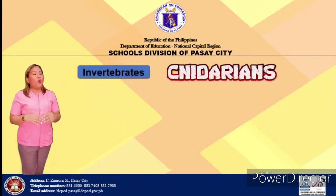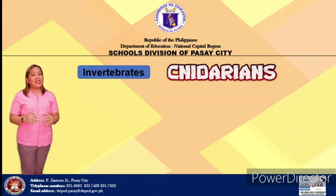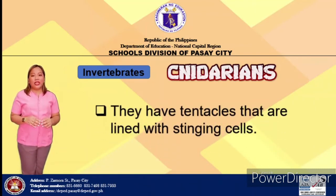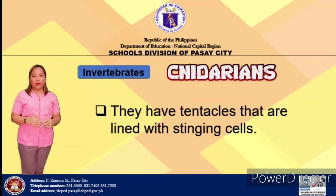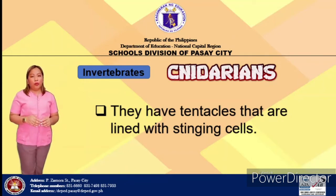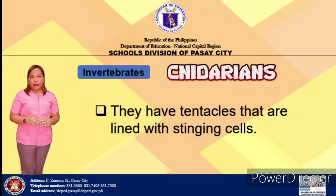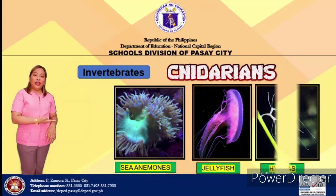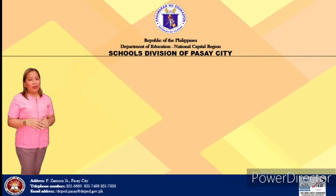How about cnidarians? What are their characteristics? Cnidarians are invertebrates that exhibit radial symmetry, meaning they have tentacles that are lined with stinging cells. Their stinging cells help them defend themselves and catch food. Animals in this group look like plants because they are attached to the ocean floor. There are about 10,000 kinds of these marine animals. They are mostly found in the ocean and freshwater. Examples are sea anemone, jellyfish, and hydras.